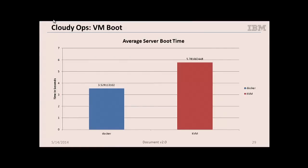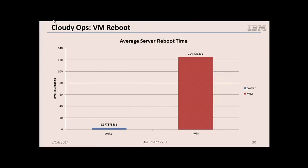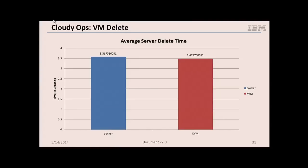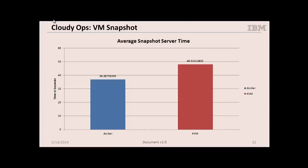Here's the average boot time with the Docker Nova driver versus KVM — about 3.5 seconds with Docker, about 5.78 with KVM. For reboot time, it takes a little longer to bring down a whole guest and bring it back up in KVM, while containers are pretty fast. Delete time was about the same. For snapshots, Linux containers are a little bit faster, though you still have to capture the image on the compute host and push it up to Glance.